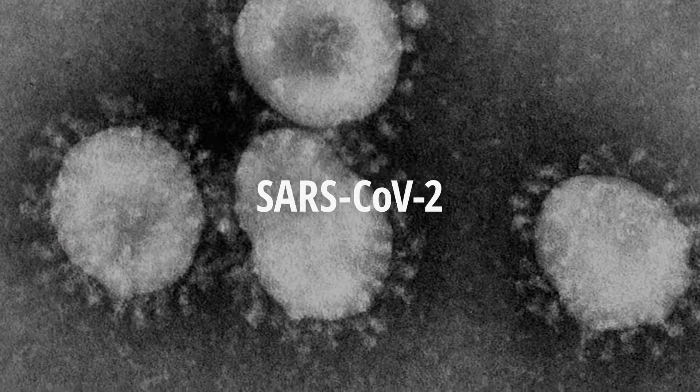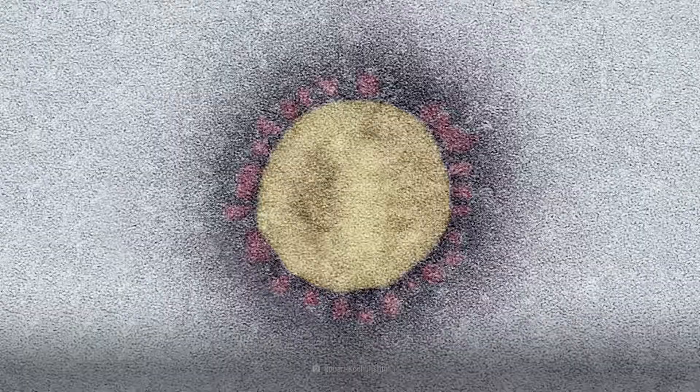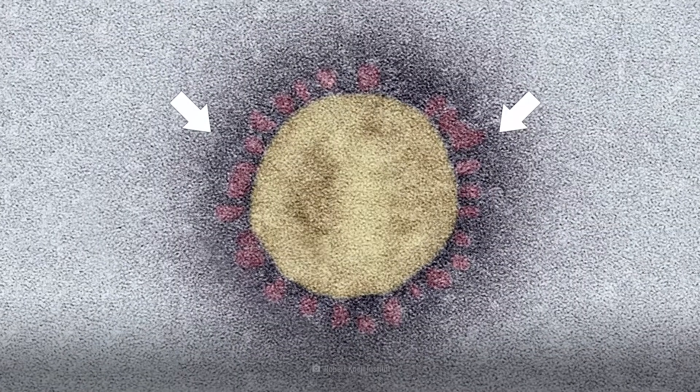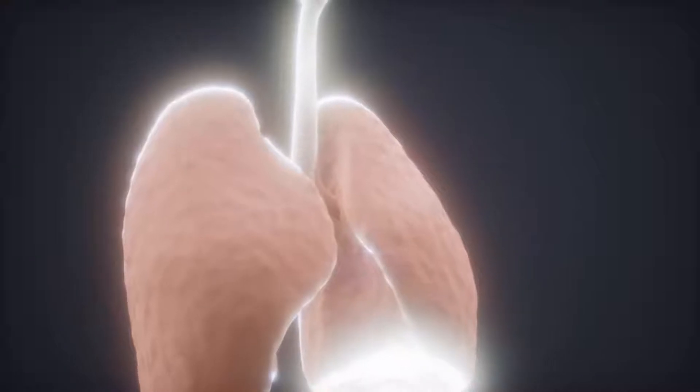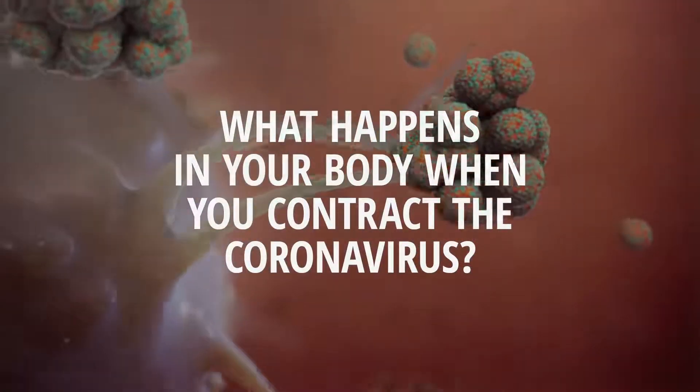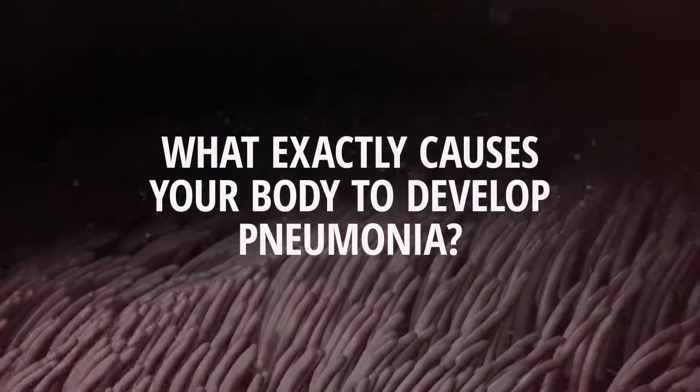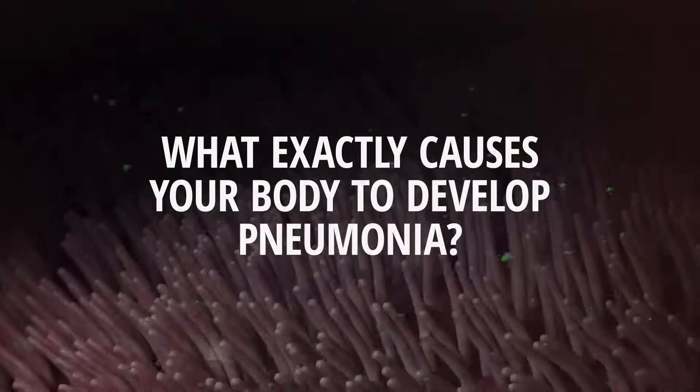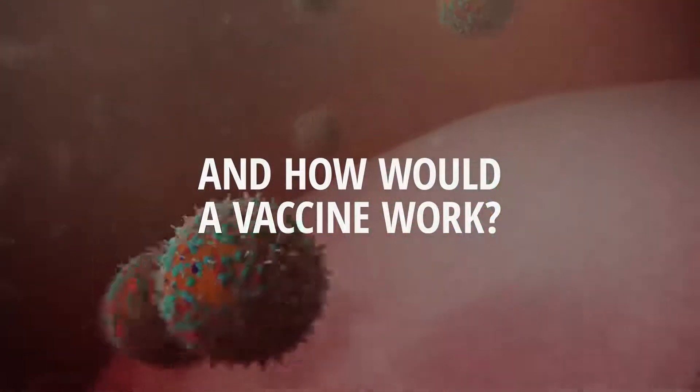This is SARS-CoV-2. It belongs to the family of coronaviruses, named for the crown-like spikes on their surfaces. SARS-CoV-2 can cause COVID-19, a contagious viral infection that attacks primarily your throat and lungs. What actually happens in your body when you contract the coronavirus? What exactly causes your body to develop pneumonia? And how would a vaccine work?